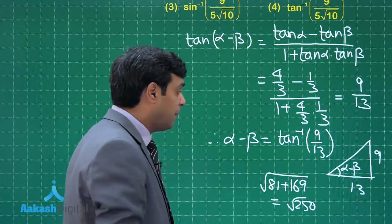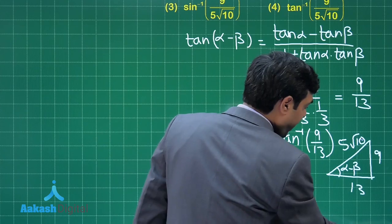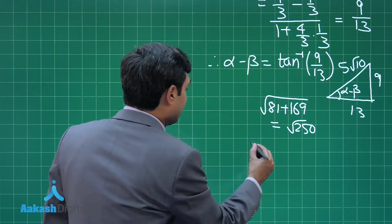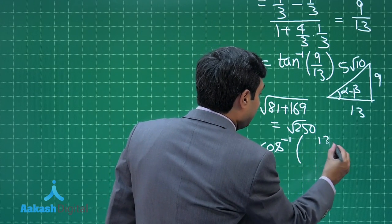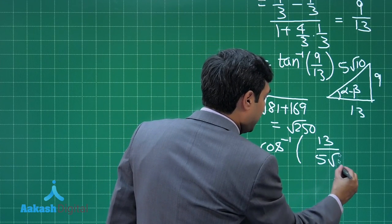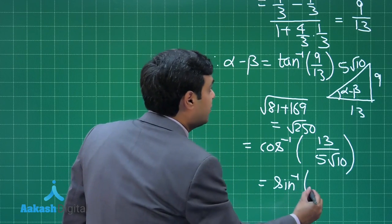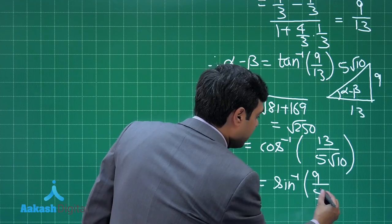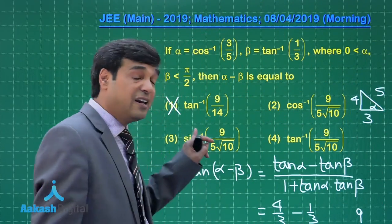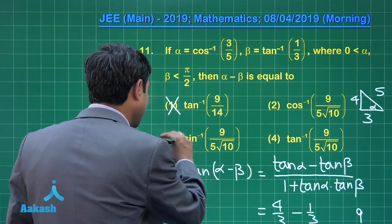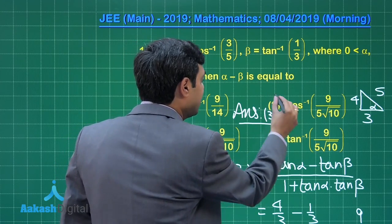From the triangle, cos(α − β) = 13/(5√10) and sin(α − β) = 9/(5√10). Checking the options, sin⁻¹(9/(5√10)) is present, so the correct answer is option number 3.